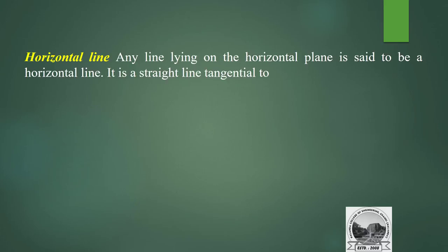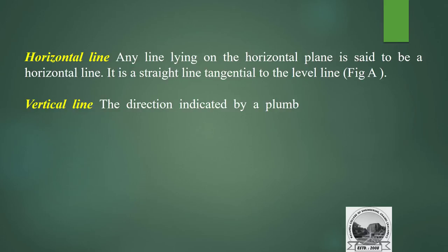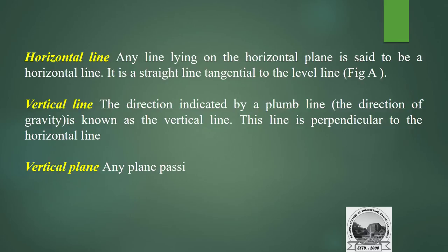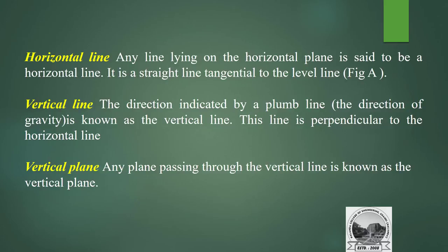Horizontal line: any line lying on the horizontal plane is said to be a horizontal line. It is a straight line tangential to the level line. Vertical line: the direction indicated by a plumb line is known as the vertical line; it is perpendicular to the horizontal line. Vertical plane: any plane passing through the vertical line is known as a vertical plane.